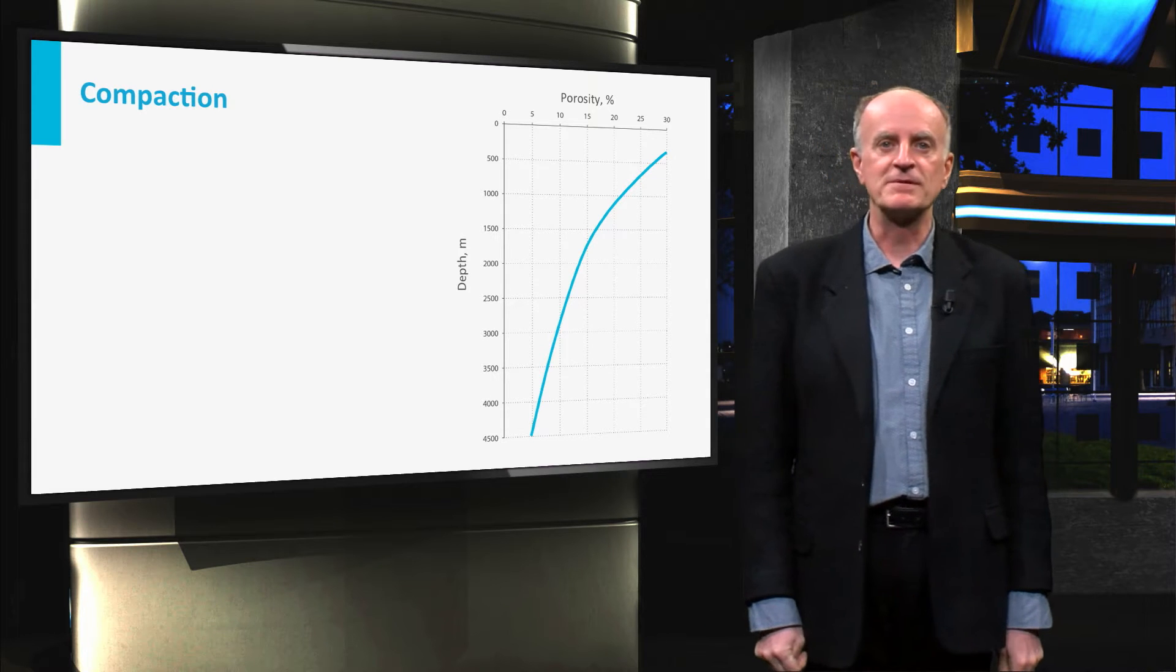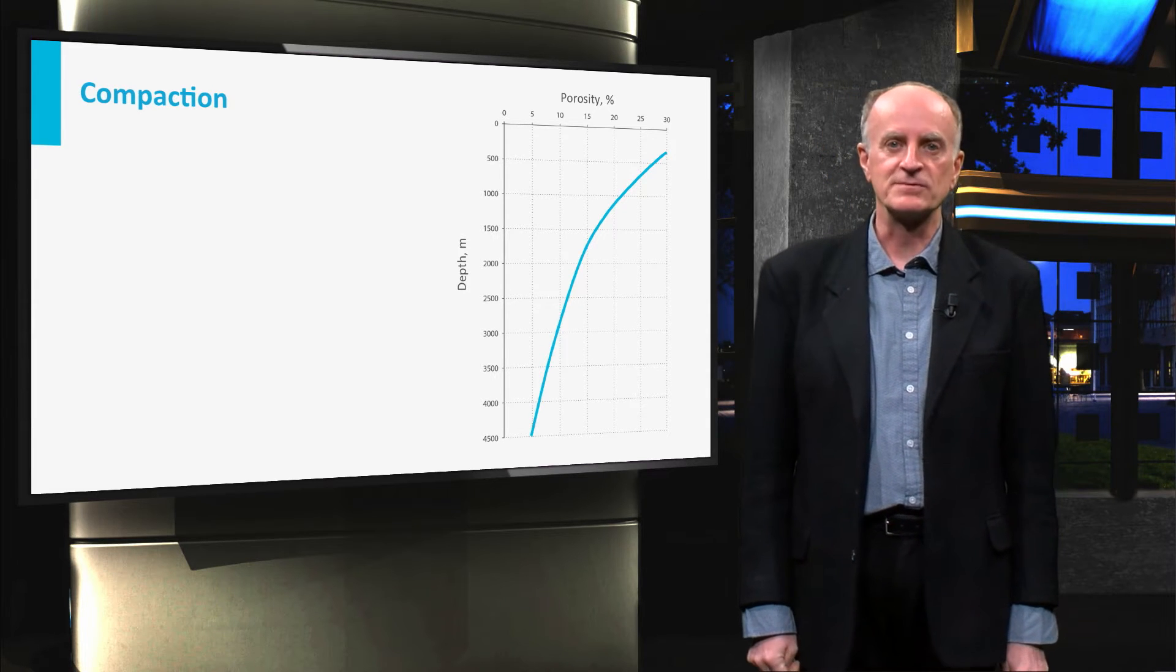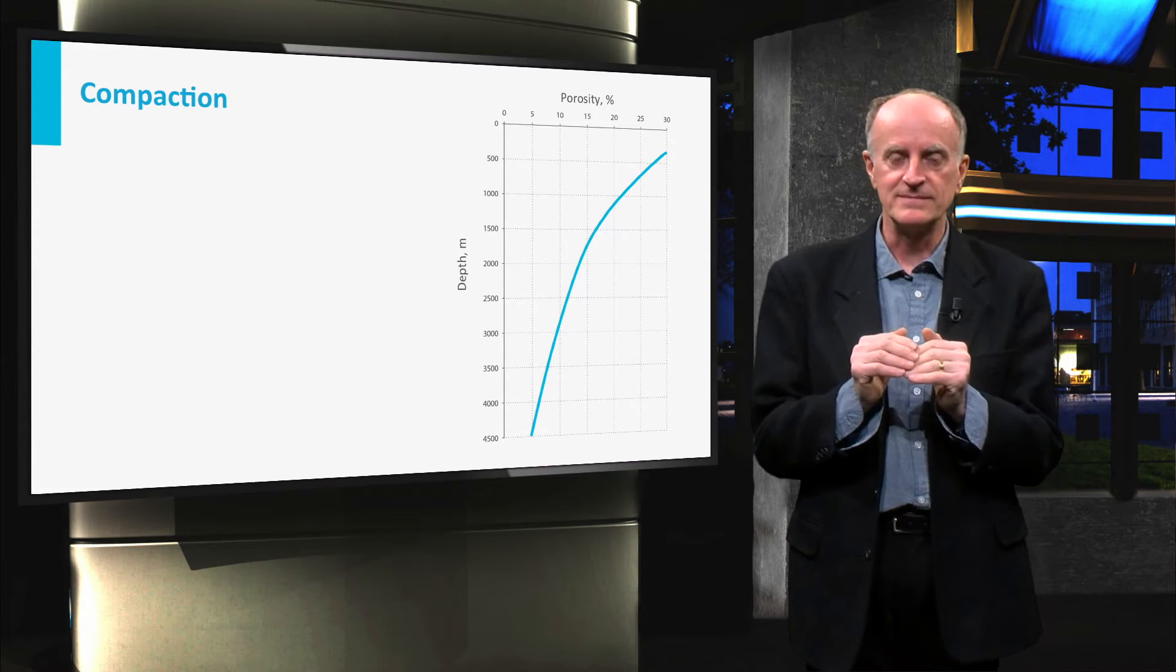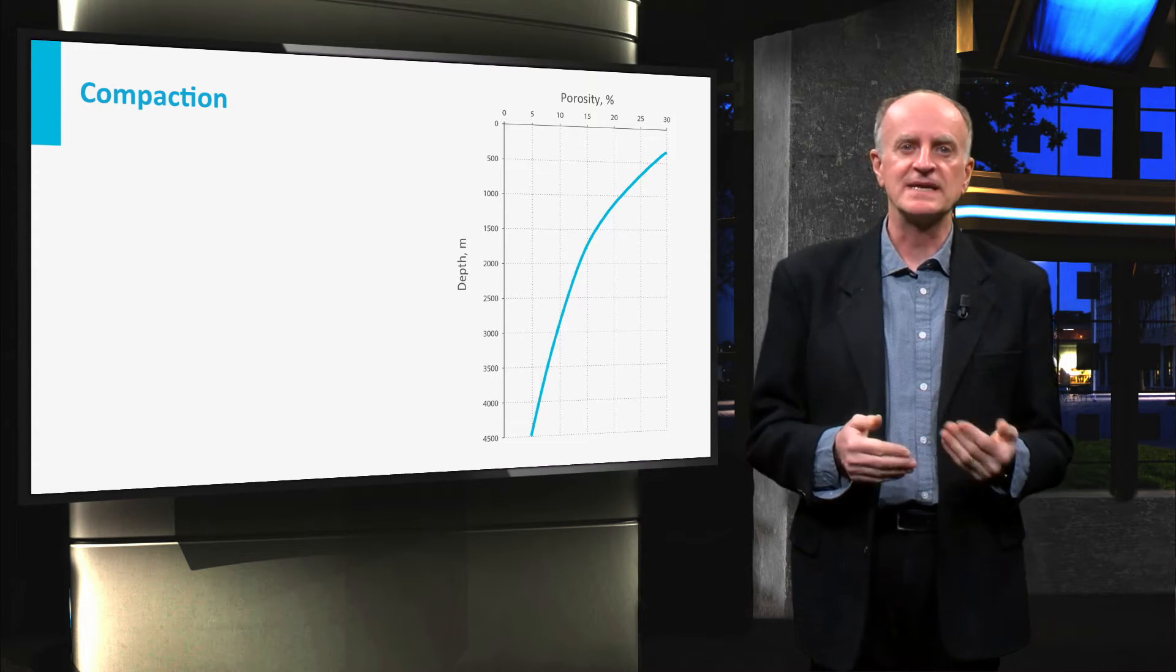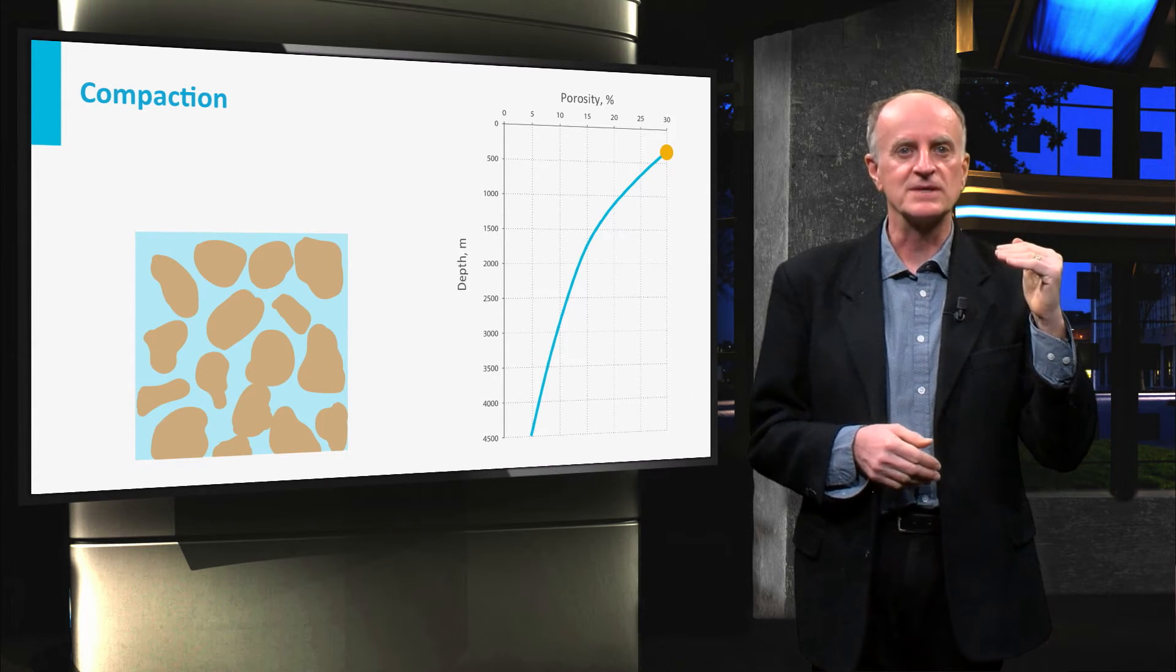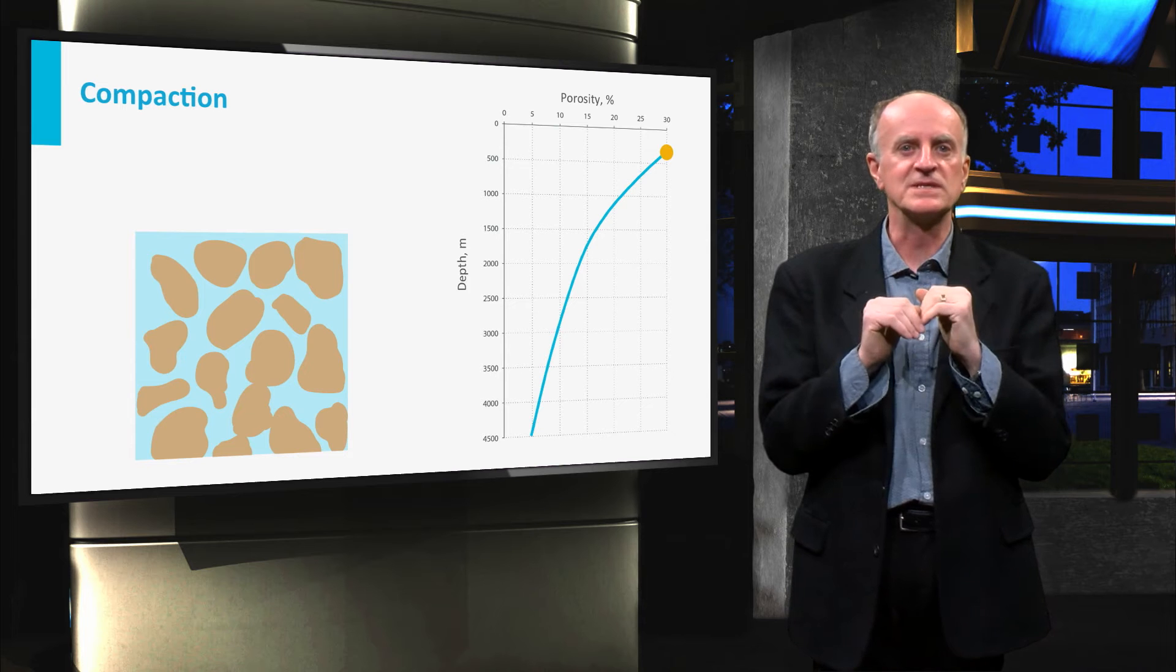Compaction is the other very important parameter influencing porosity. The higher the compaction, the lower the porosity. In the plot you see how the porosity of sandstone changes with depth. When the sand is close to the surface, grains are loose and porosity will be high.